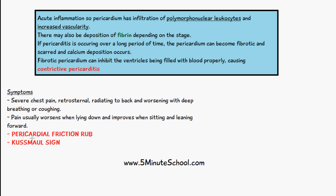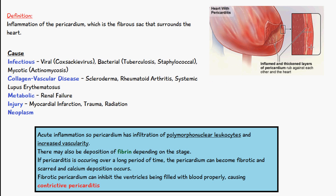Other symptoms include the pericardial friction rub. This is heard using a stethoscope and produces a louder sound divided into three components — one systolic and two diastolic sounds. As seen in the diagram, the pericardium is a double-walled sac with pericardial fluid in between. The inflammatory response enlarges the walls, reducing fluid, causing them to rub together. This rubbing produces the pericardial friction rub, a key diagnostic feature of pericarditis.